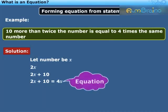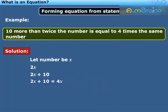It is equal to 4 times the number, that is 4x. Hence the required equation is 2x plus 10 is equal to 4x. Observe that this equation has 2x plus 10 as LHS and 4x as RHS, and it has a variable on each side.